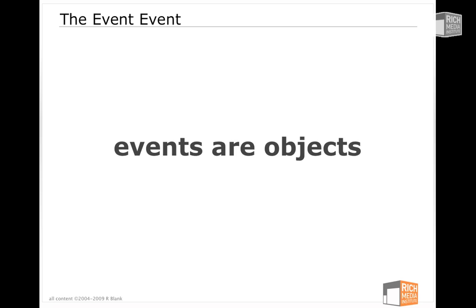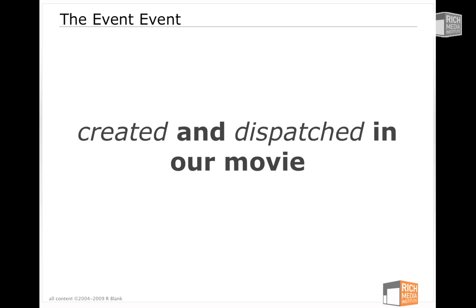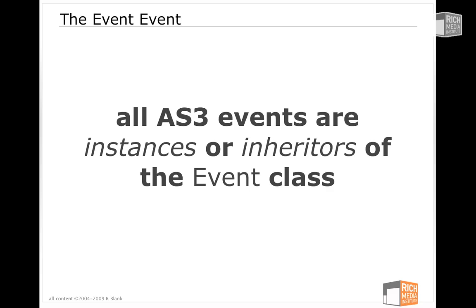All events are objects. Unlike in real life where an event maybe isn't a real thing — you can't touch a party, you can't touch a parade — in Flash, everything that we would think of as an event is actually an object. It's something that consumes resources, a tangible thing. These event objects are created and dispatched in our movie; that's what we hear — the dispatching of the event. Every event we're ever going to listen to is either an instance of the Event class or an inheritor of it. So the event we're hearing is either an Event, like Event.CHANGE, or an inheritor like MouseEvent.CLICK. MouseEvent inherits from Event, so all events in the language stem from this one class.